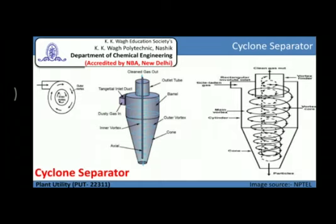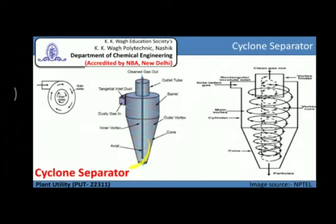Now we will see the working of this cyclone separator. The flow stream of gases enters the body of the separator tangentially from the tangential inlet duct at the top and begins to swirl due to the circular design of the chamber until it reaches the bottom. The material denser than the carrier medium is separated from the stream during this downward flow. Solid particles present in the gases are thrown towards the wall of the cyclone separator, travel down to the bottom, and are removed from the outlet.